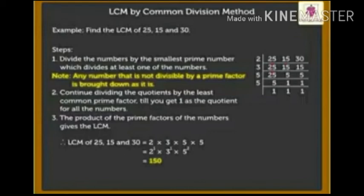Step 3: The product of the prime factors of the numbers gives the LCM. LCM of 25, 15 and 30 is equal to 2 × 3 × 5 × 5 = 150.